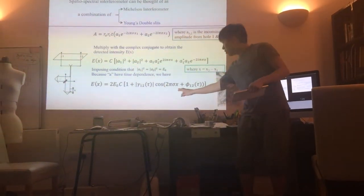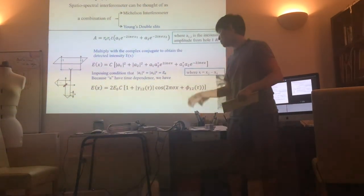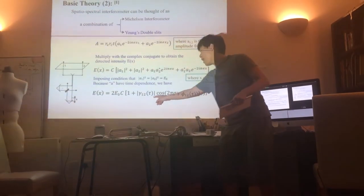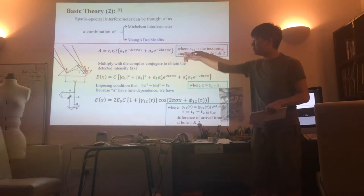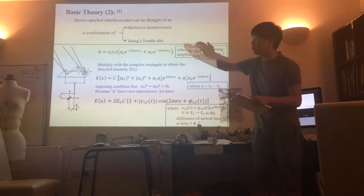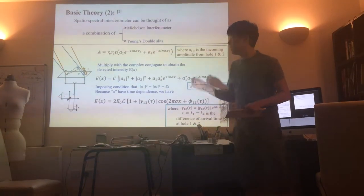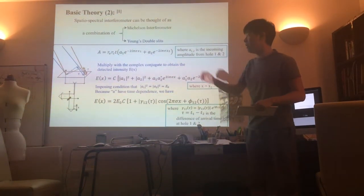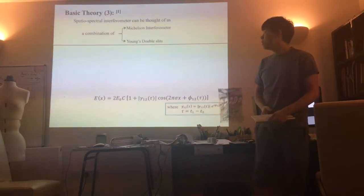Now, not only do we have the spatial phase dependence in the Michelson interferometer, but we have the tau dependence. The tau being the time delay between different rays. So if my source is away from the plane, then it has a much larger delay.